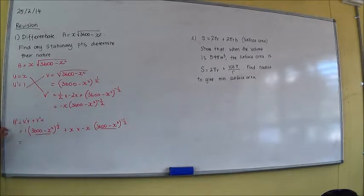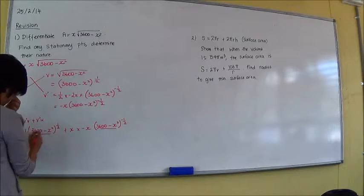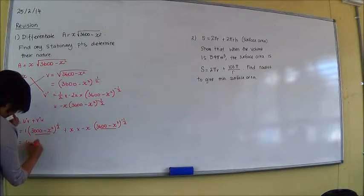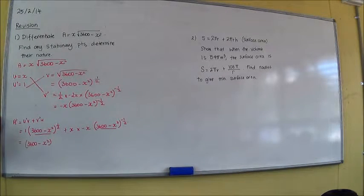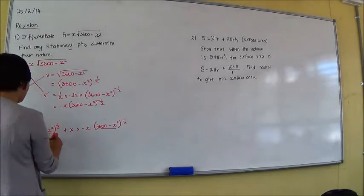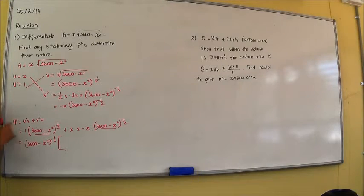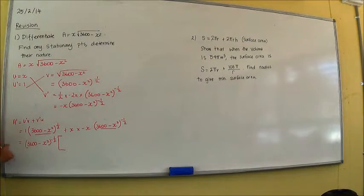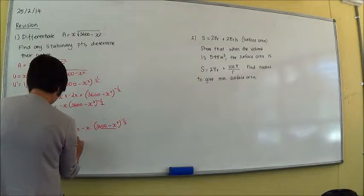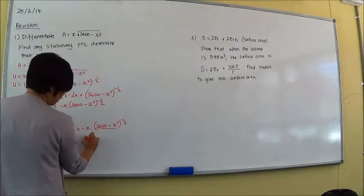All right. So what's the common factor between these two? 3,600 minus x squared to the power of negative a half. So how do I convert that into this set of brackets? I'm going to change this, times to the power of 1. Yep.